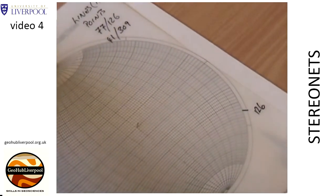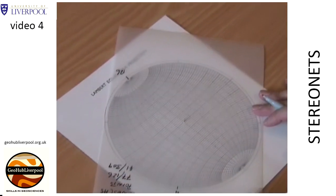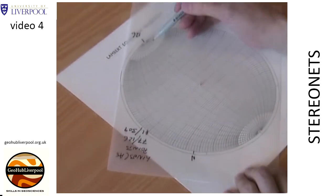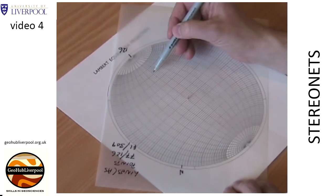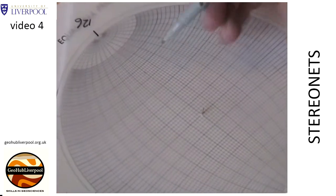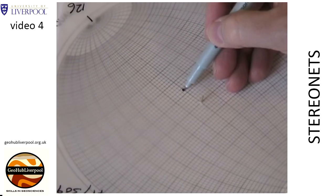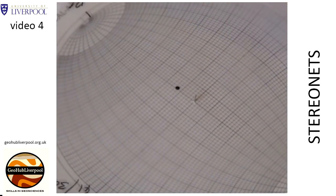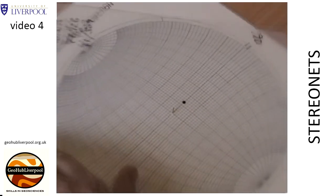Rotate the tracing paper so that this mark lies on the north pole of the stereo net. The line plunges at an angle of 77 degrees, so hold the tracing paper in place and count 77 degrees from the north pole on the primitive circle along the north-south line. Use the small circles to count 77 degrees. Mark the point that represents the line.